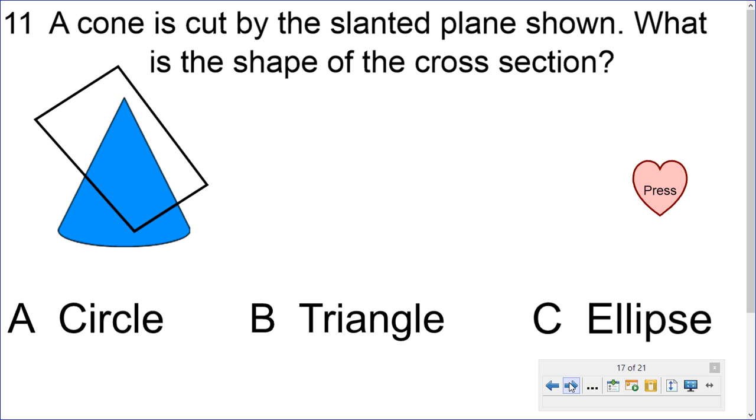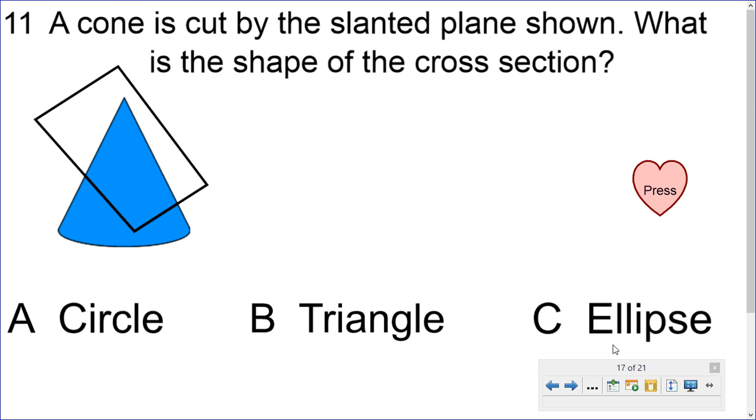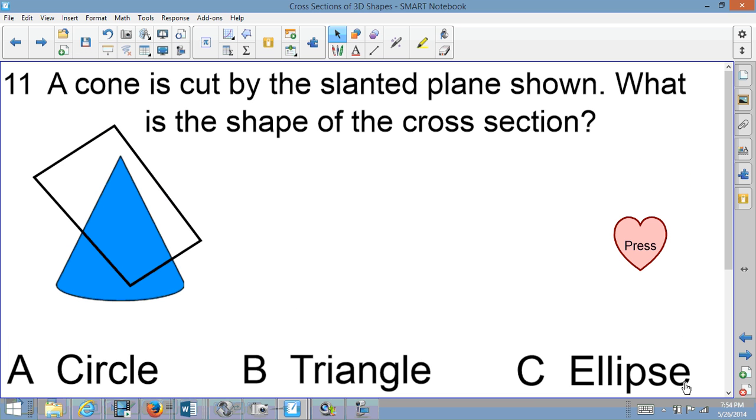Here's a good extra credit question. If a cone is cut by a slanted plane shown below, what is the shape of the cross-section? So ladies and gentlemen, I hope you look up the word ellipse and see what that means because that's one word I did not give you.